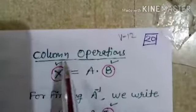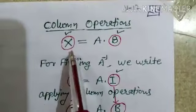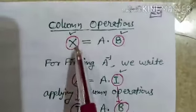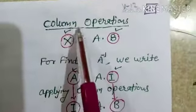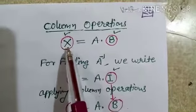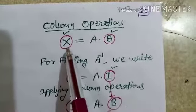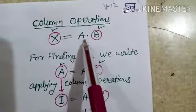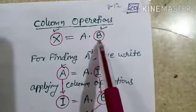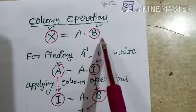Now, if we want to apply column operations, suppose again there is a matrix equation X equals A into B. If you want to apply column operations, this operation will be applied on the left-hand side single matrix, but on the right side — which is a product of two matrices — the operation will be applied on matrix B, the second matrix, not on A.